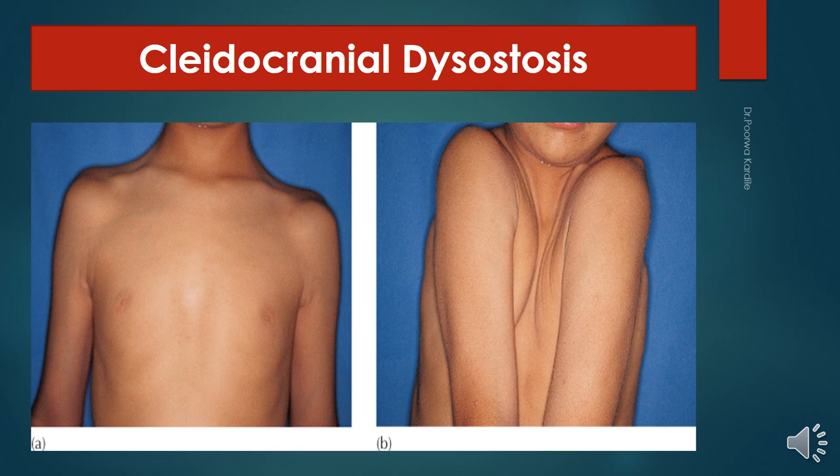Permanent teeth include supernumerary teeth. Treatment involves surgical correction to treat the deformity. Craniofacial surgery corrects the skull defect. In case of coxa vara, corrective femoral osteotomies are performed. Clavicular fragments are excised to treat nerve irritation.